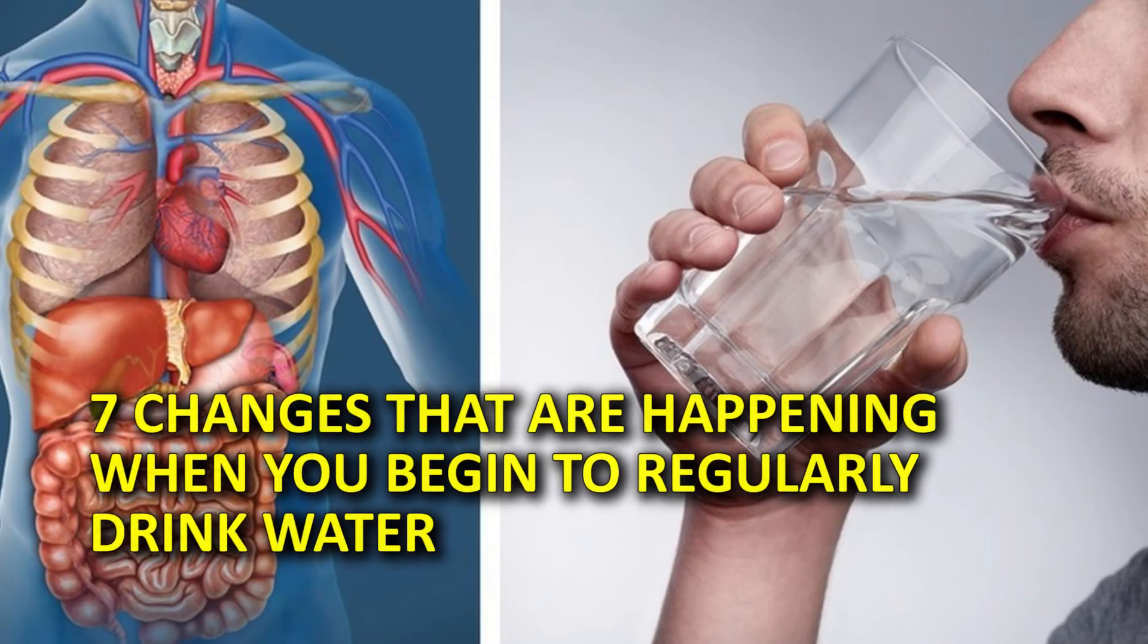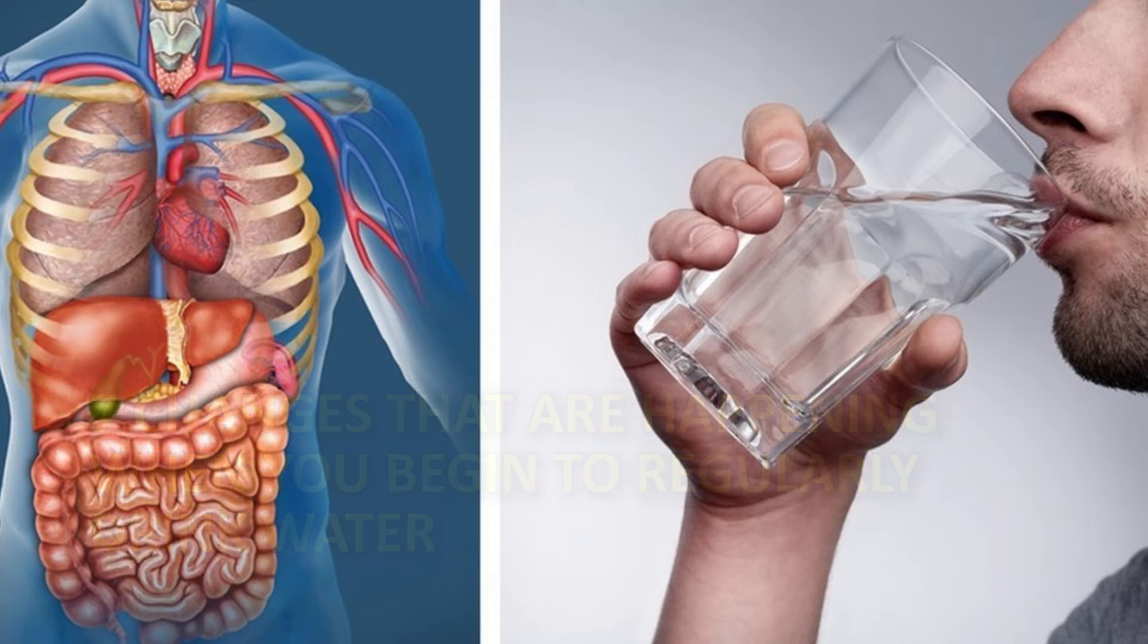Up to 60% of an adult's body is water. According to the United States Department of the Interior, the brain and heart are 73% water, and the lungs are 83% water. The skin contains 64% water, and in muscles and kidneys, 79%.